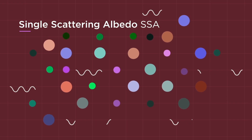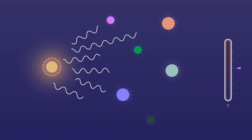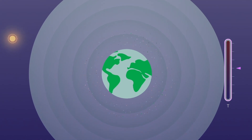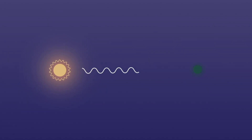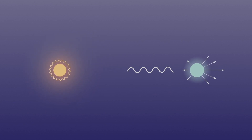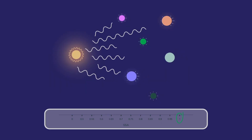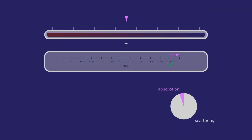Single scattering albedo, or SSA, defines the absorbing or scattering nature of the particles. This is a very important parameter because scattering of sunlight on aerosols causes the atmosphere to cool, but when particles absorb the light, they cause warming. So it is very critical to correctly estimate SSA to understand climate-related processes. Scattering is symmetrical in all directions when there are small particles, but it becomes dominant in the forward direction as particles become bigger. SSA is defined as the ratio of the decrease of sunlight due to scattering to the total decrease. When it is 1, there is only scattering, and lower values mean more absorption. Generally, when SSA is more than 0.95, the atmosphere is cooled, and when it is less than 0.86, it is warmed.